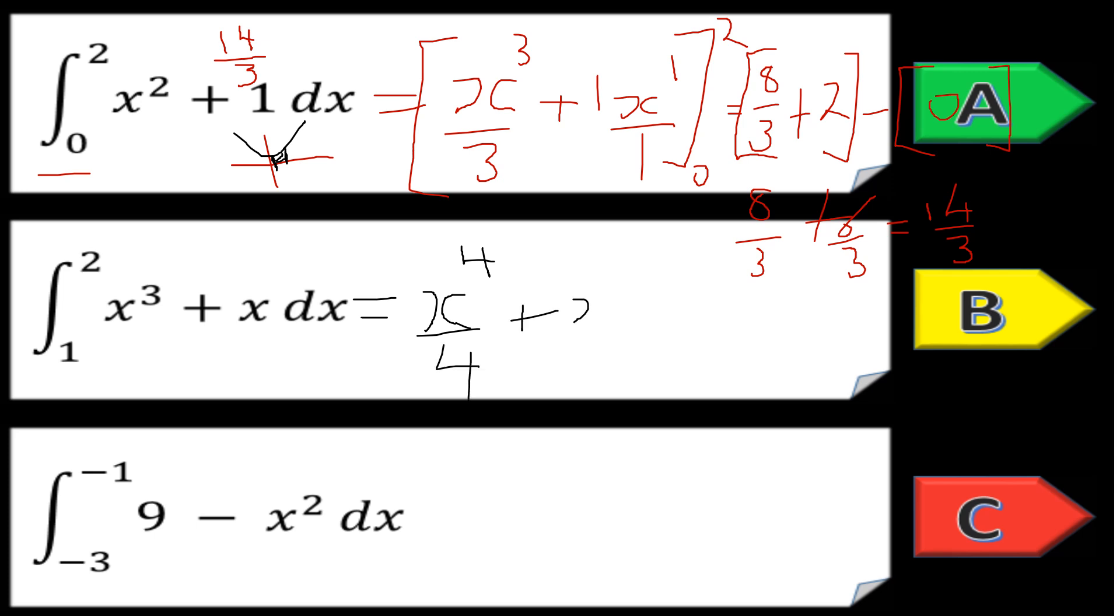We get x to the fourth over four, and then x goes to x squared over two. This is now between the limits of one and two. Remember, it is always the top limit minus the bottom.